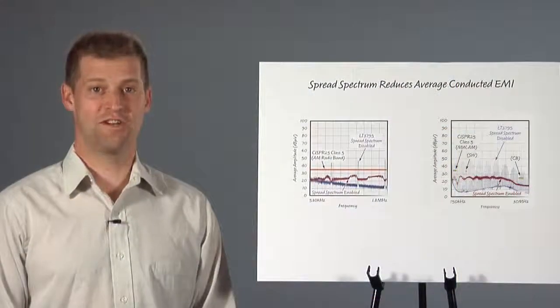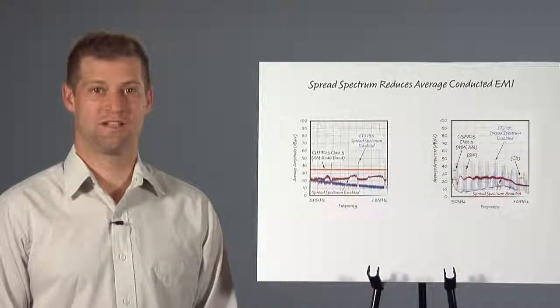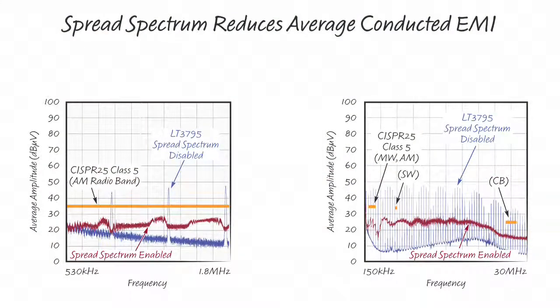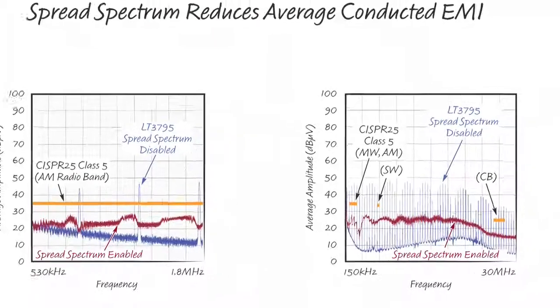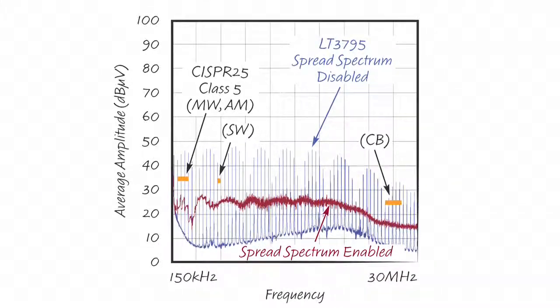The average conducted EMI results show that spread-spectrum gives us up to 20 dB microvolts of attenuation. At higher frequencies, you can see that the spread-spectrum reduction is even larger than the AM band reduction.